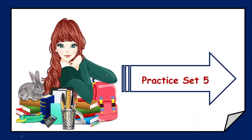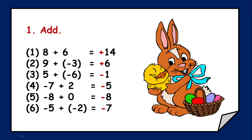I hope now everyone has got the concept of addition of integers. Now based on the same addition we are going to solve practice set 5. The first question is to add: plus 8 and plus 6 — both numbers have the same sign, so after ignoring the sign, simply add 8 and 6 to get 14, and give the common sign which is plus. Then we have numbers with different signs — ignore the sign, subtract the smaller number 3 from 9, we get 6, and the sign of the greater number is plus.